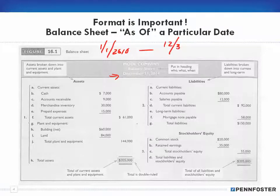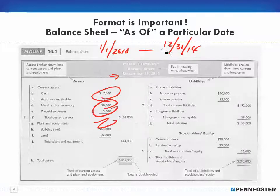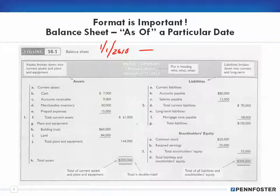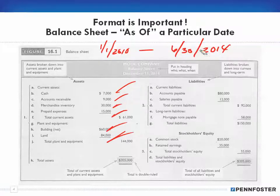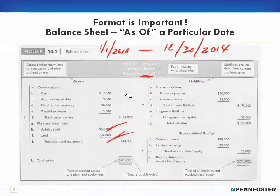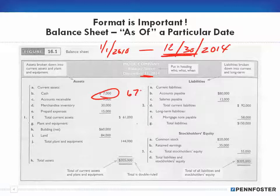For instance, if instead of December 31st, 2014 we specified June 30th, 2014, all the numbers would be different. To put an even finer point on it — on December 31st the cash balance was $7,000, but if the date were December 30th it might have been $6,762. The date plays an important part in what you're looking at.